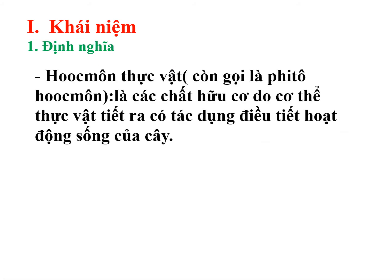Hốc môn thực vật hay còn gọi là phytohormone là các chất hữu cơ do cơ thể thực vật tiết ra, có tác dụng điều tiết các hoạt động sống trong cây.